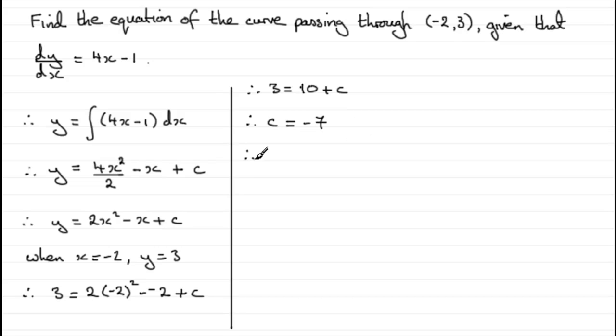So therefore, the equation of the curve, in answer to the question, let's put therefore equation of curve so we can be clearly seen to answer the question. Equation of the curve is going to be y equals, well we've got 2x² - x plus that constant, and that constant of integration c we found to be -7. So there's our answer.